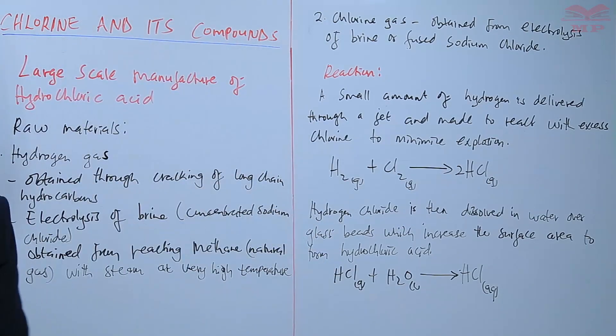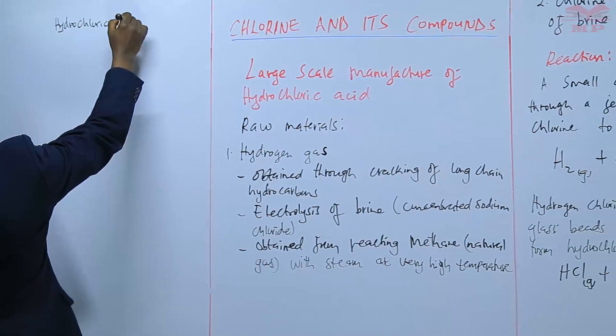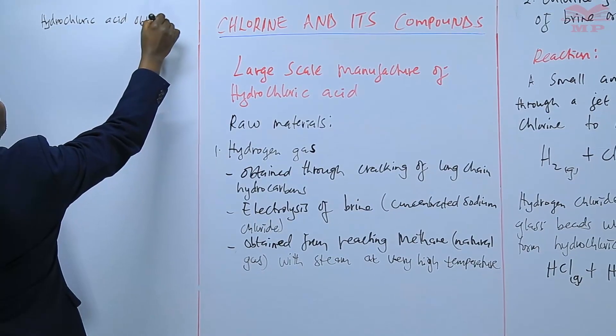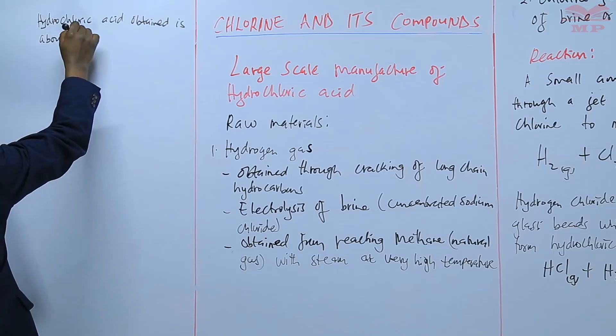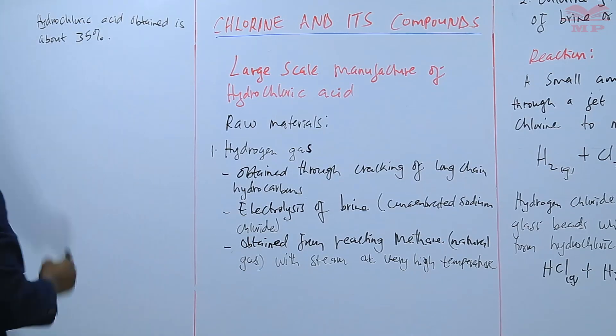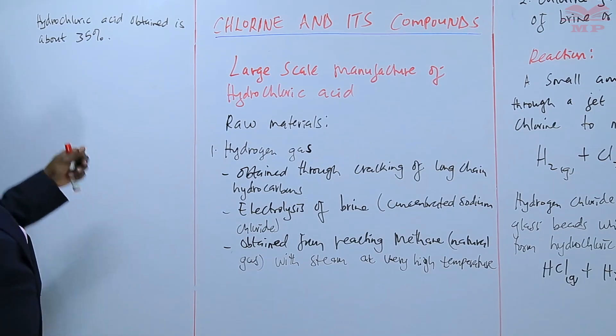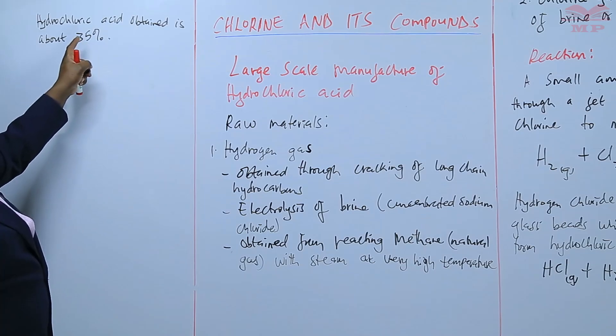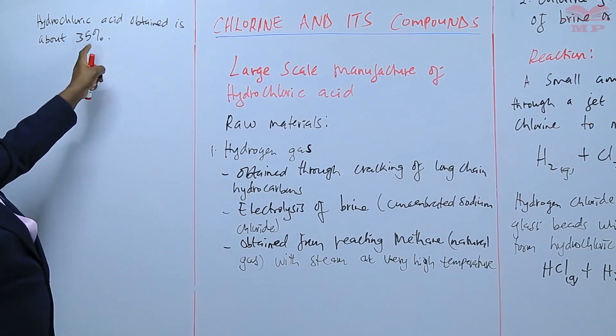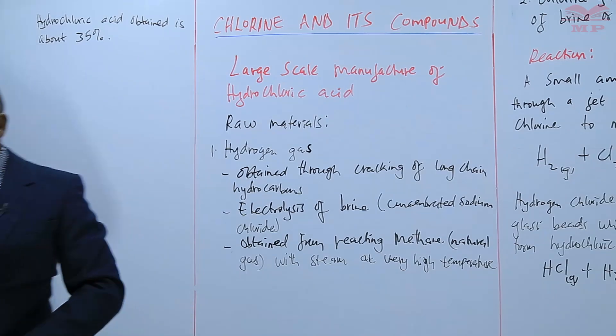And in that equation, the hydrochloric acid obtained is about 35 percent. So if it is to be purified further or to obtain a higher percentage, it is taken through fractional distillation to get rid of the excess water. So we'll have a diagram to illustrate that.